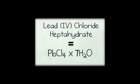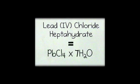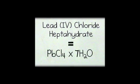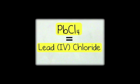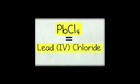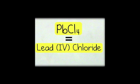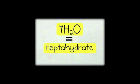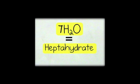For example, lead(IV) chloride heptahydrate is written as PbCl₄ for lead(IV) chloride, followed by a multiplication sign and 7H₂O for heptahydrate.